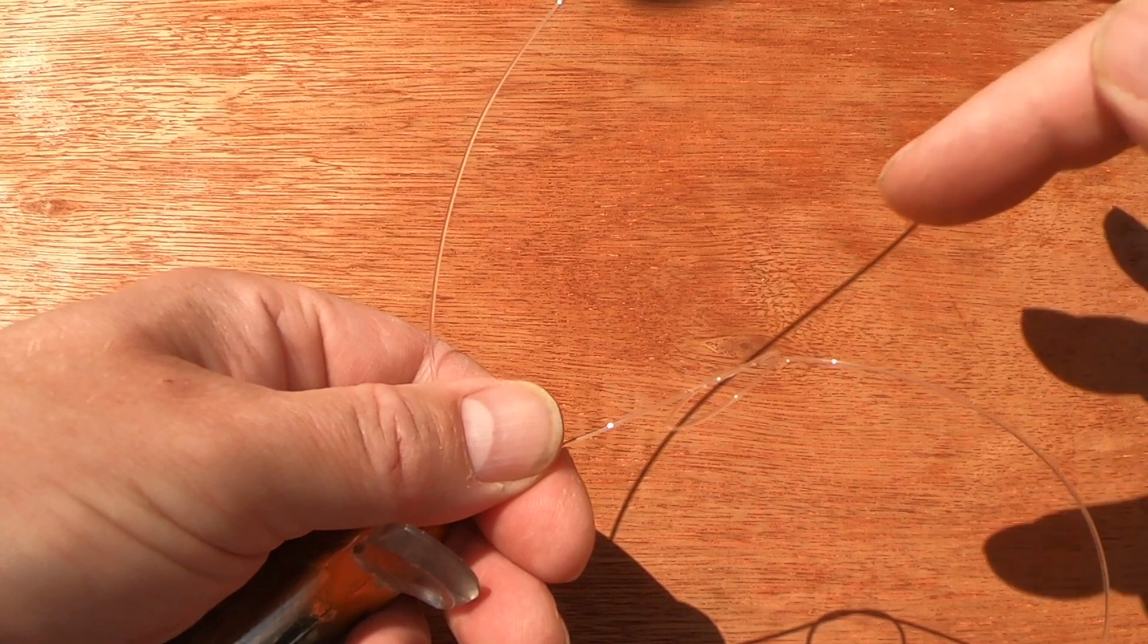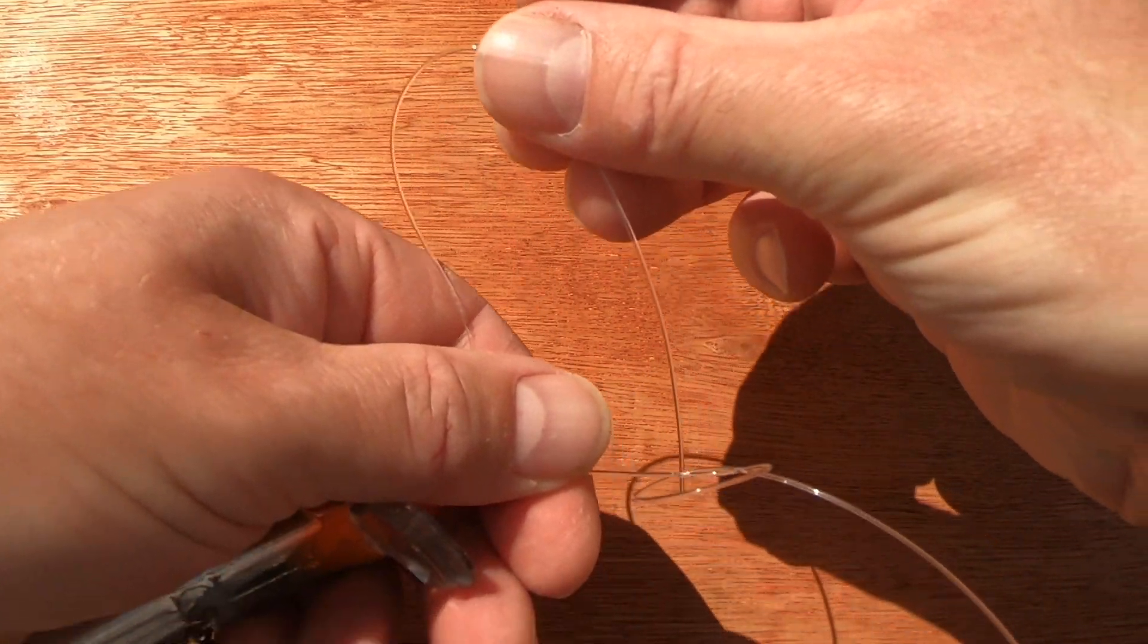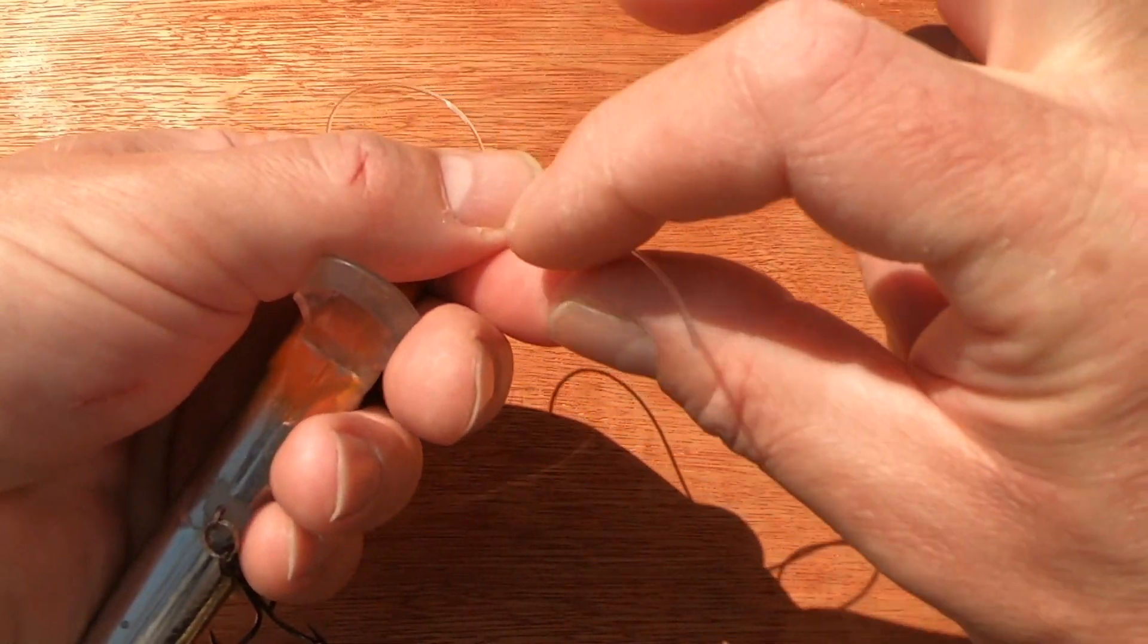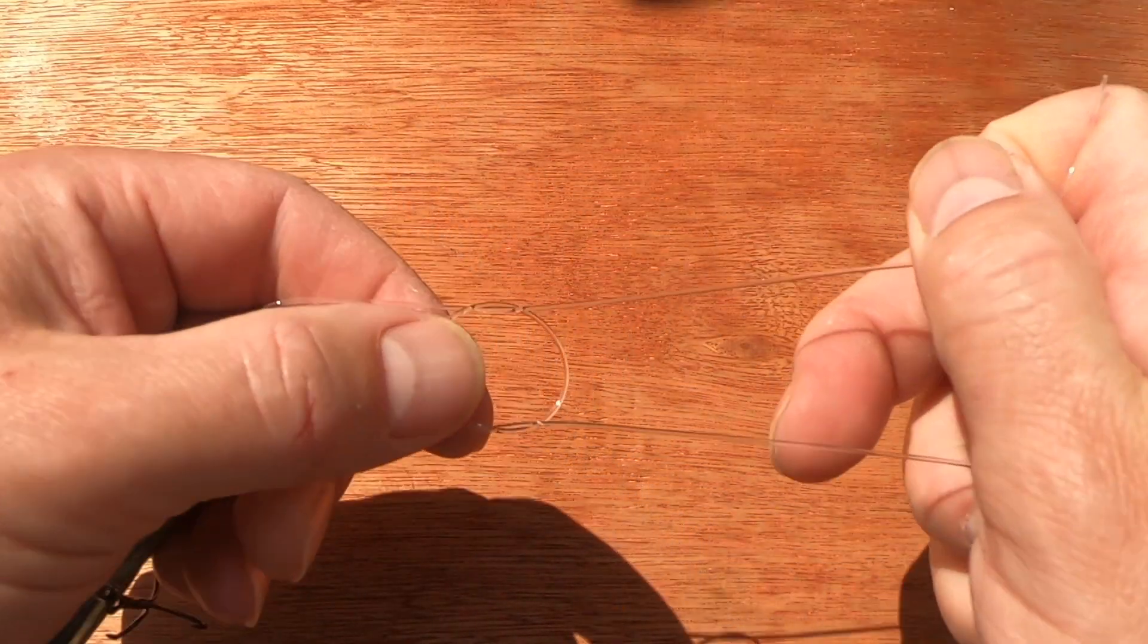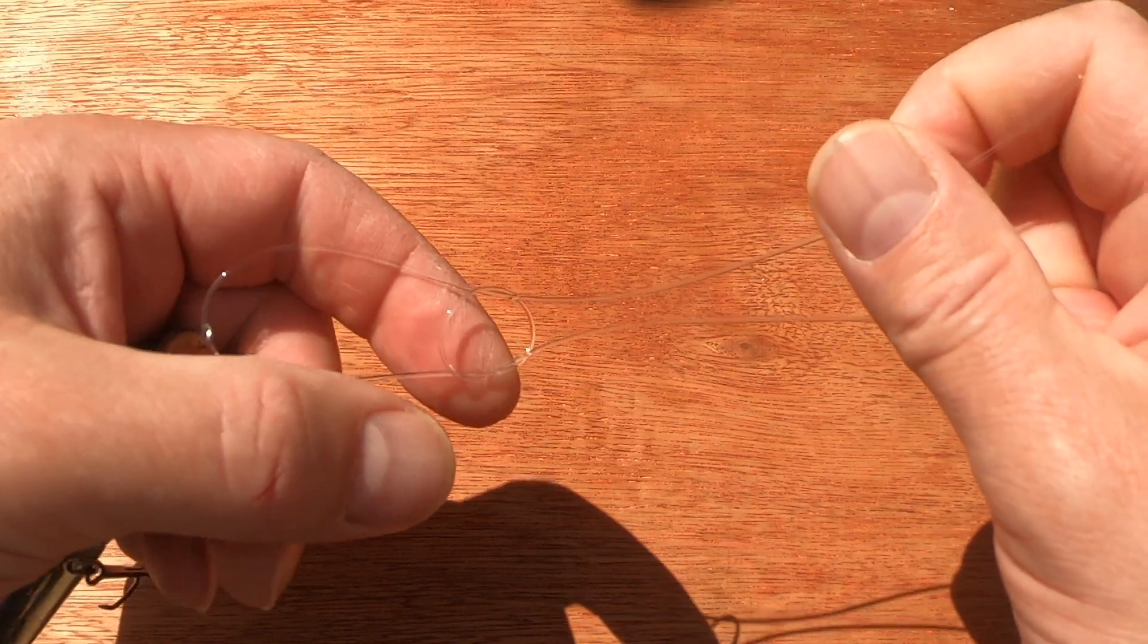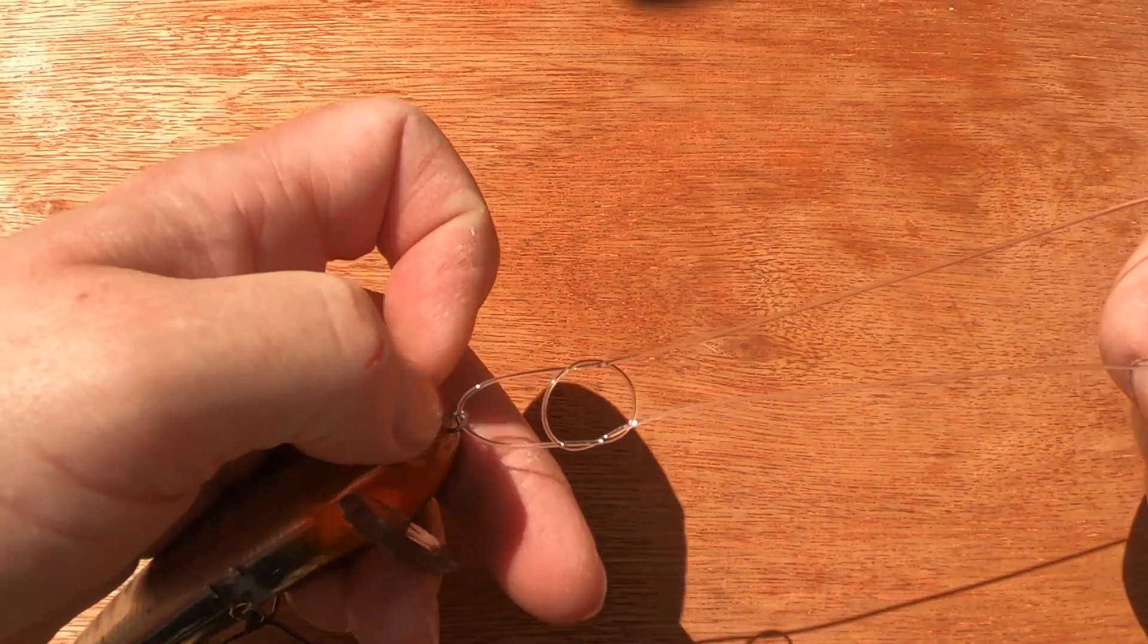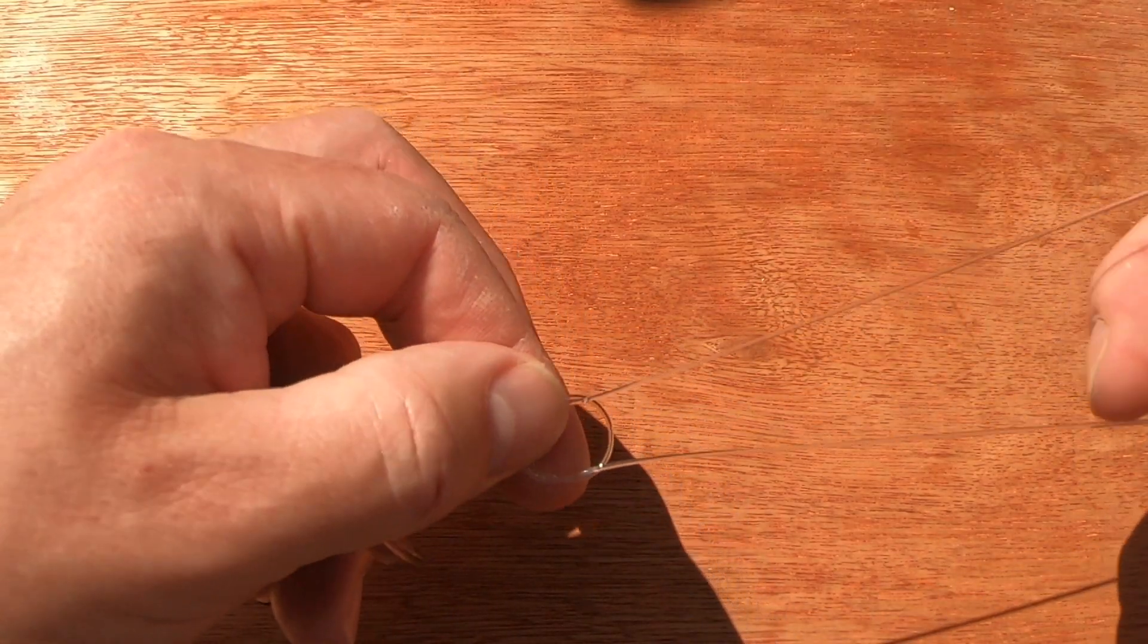Once you've threaded your lure on, pull the knot down so that you have a down facing side and an up facing side of it. Pass the line, your tag end, back through the knot.